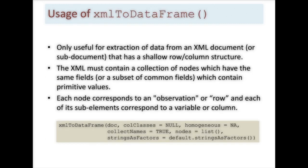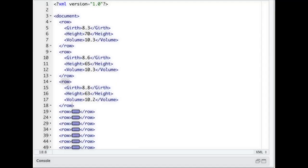So the XML has to contain a collection of nodes which have the same fields which contain primitive values, and each row or observation is what you're reading in. If it's not that particular form and if it's not this kind of structure of two levels, XML to data frame does not work.